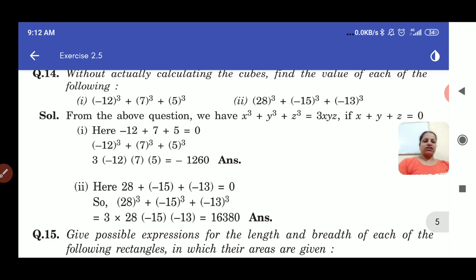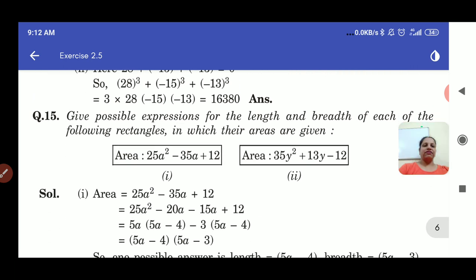Now let us do question number 15 and question number 15 is give possible expressions for length and breadth of each of the following rectangles in which their areas are given. Now in this question also we are given two parts. Let us solve first part and we are given the area. We know that area is length into breadth.